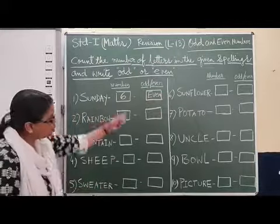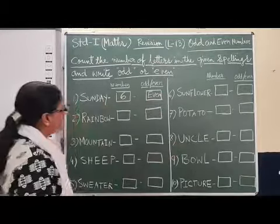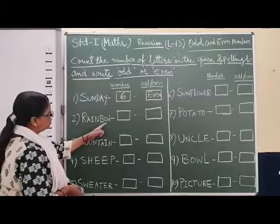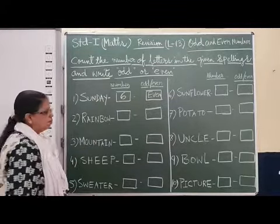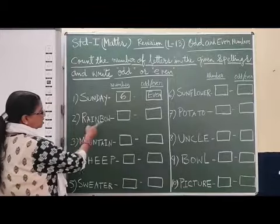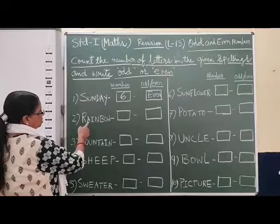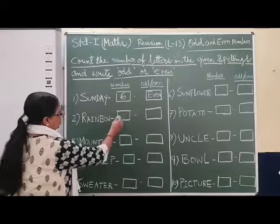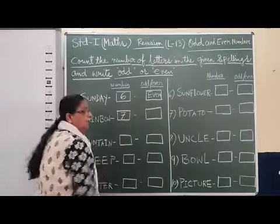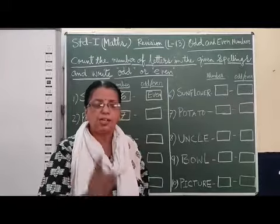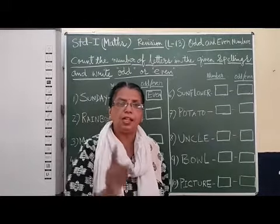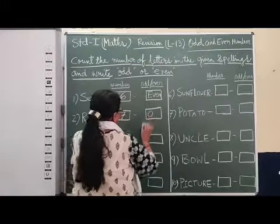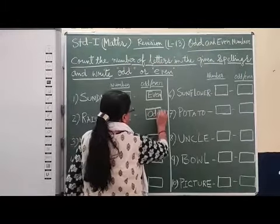In the same way we will do the next question. The second spelling is R, A, I, N, B, O, W — Rainbow. So how many letters are used here? 1, 2, 3, 4, 5, 6, 7. We will write 7. The numbers that end with 1, 3, 5, 7, 9 are called odd numbers. So 7 is here — this is an odd number.